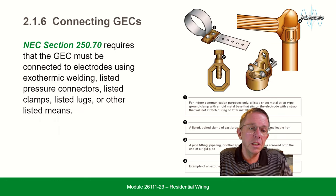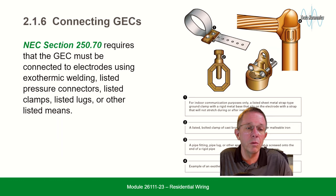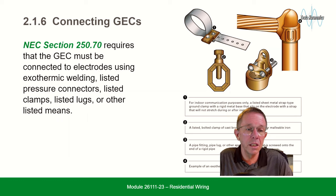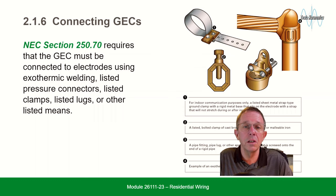Connecting GECs: NEC section 250.70 requires that the GEC must be connected to the electrodes using exothermic welding, listed pressure connectors, listed clamps, listed lugs, or other listed means.